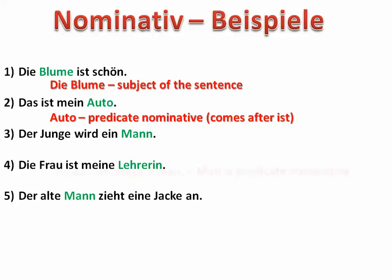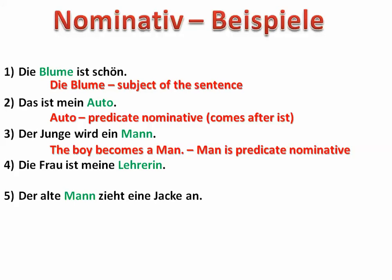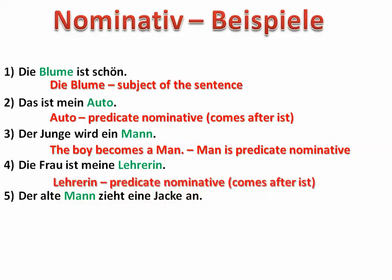'Der Junge wird ein Mann' — the boy becomes a man. So in this case, it's also predicate Nominative, occurring after a conjugation of the verb werden, in this case wird. 'Die Frau ist meine Lehrerin' — this is also the predicate Nominative, coming after a conjugation of the verb sein, ist. 'Der alte Mann zieht eine Jacke an' — the old man is putting on a jacket. The man is the subject, so it's Nominative as well.